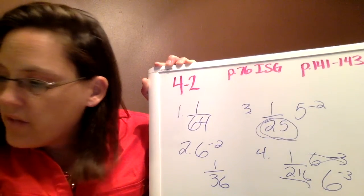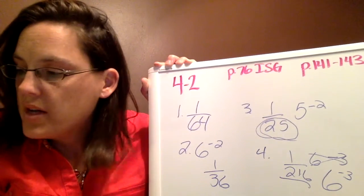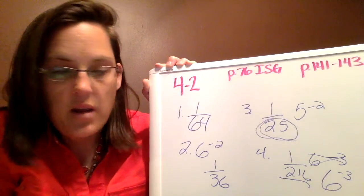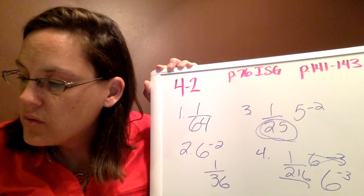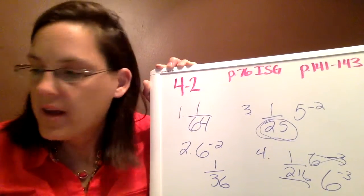For number 5, 3 to the negative fourth power is 1 over 81. And number 6, 1 over 32 is equal to 2 to the negative 5.